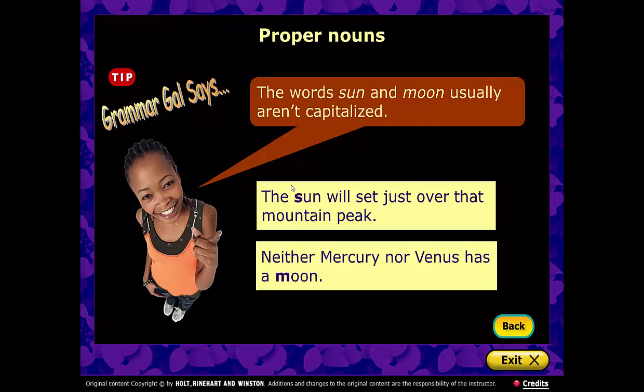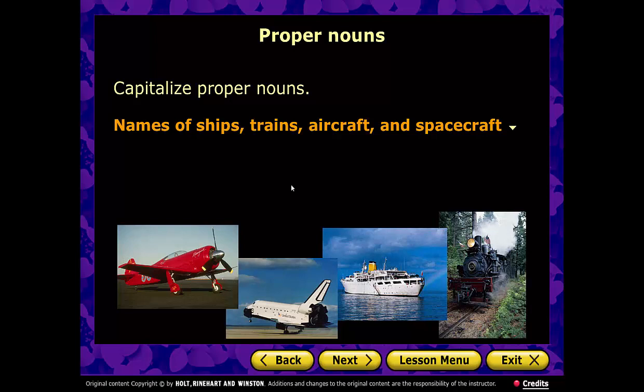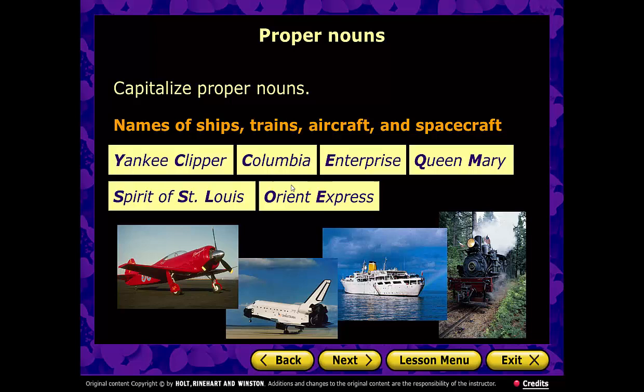Continuing with proper nouns: names of ships, trains, aircraft, and spacecraft. Examples include the Yankee Clipper — a type of ship; Columbia — one of our space shuttles; Enterprise — for Star Trek fans; Queen Mary — a big cruise ship; Spirit of St. Louis — the plane Lindbergh flew; and the Orient Express — a type of train.